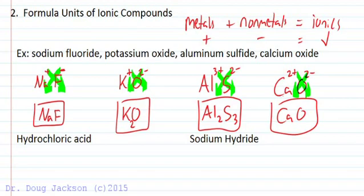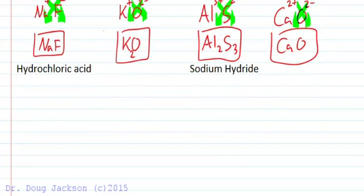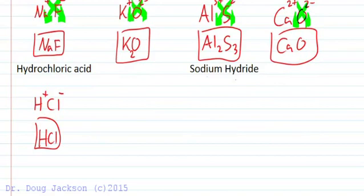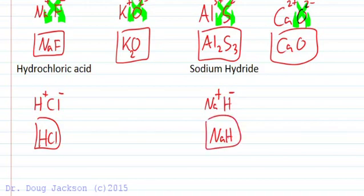With nonmetals, hydrogen forms H plus. So for hydrochloric acid, we have one plus for hydrogen and one minus for chlorine — we crisscross to get HCl. When hydrogen is in an ionic compound with a metal like sodium in column one, hydride forms instead — we add an electron to fill hydrogen's energy level and it becomes a minus ion. One goes to one and we get sodium hydride, NaH. All of these are examples of formula units of ionic compounds.